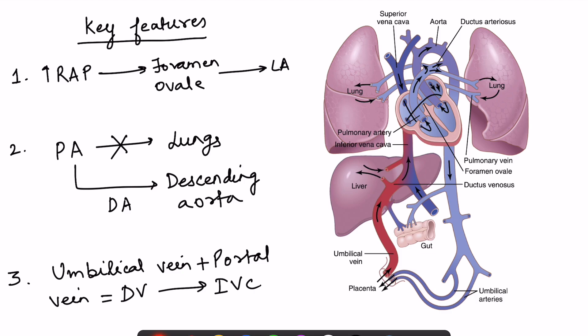First, there is increased pulmonary resistance because lungs are collapsed. Lungs don't function in fetal life, so the pulmonary vessels are also collapsed along with the lungs. We can see here the right atrium, the right ventricle, and pulmonary vessels arising and going to the lungs. However, because the lungs are collapsed, very little blood flows into these pulmonary vessels. Instead, the ductus arteriosus carries blood into the descending aorta.